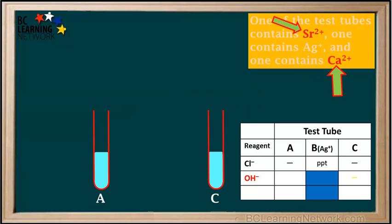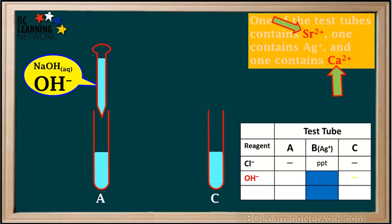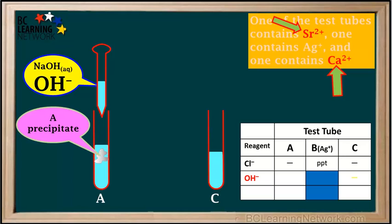We rinse out test tubes A and C and refill them with the original solutions. We'll remove test tube B since we already know it contains silver ions. We fill the pipette with NaOH solution and bring it over to test tube A. We slowly add NaOH to test tube A and observe that OH- formed a precipitate. So we'll write PPT in the cell for hydroxide in test tube A.